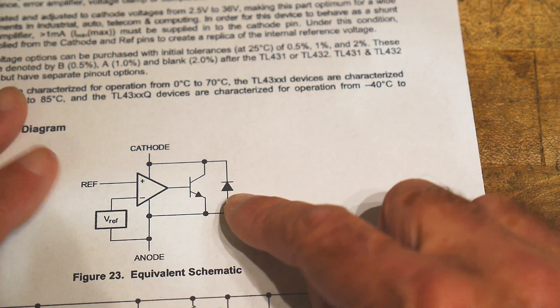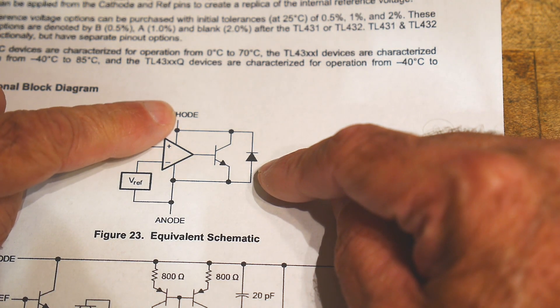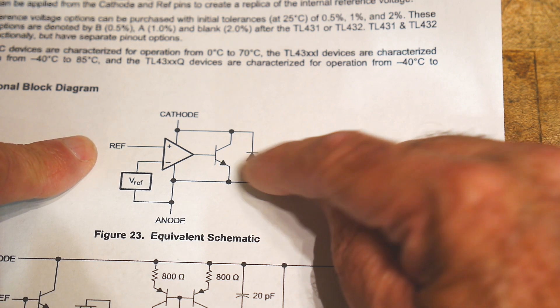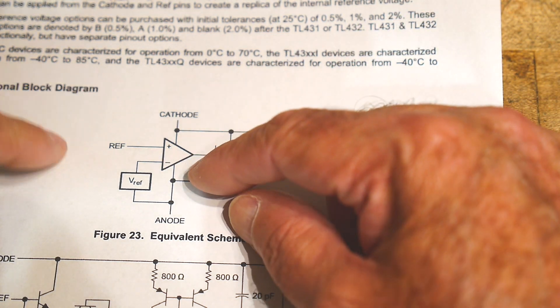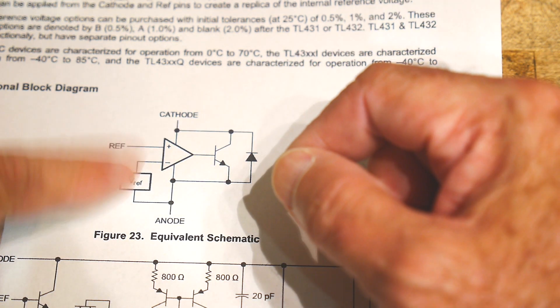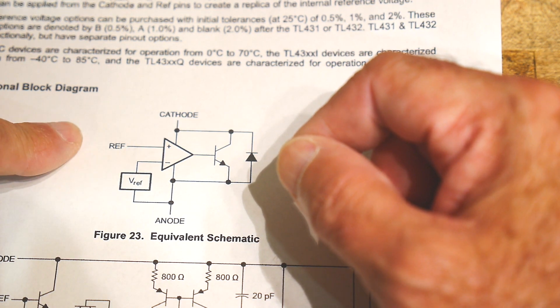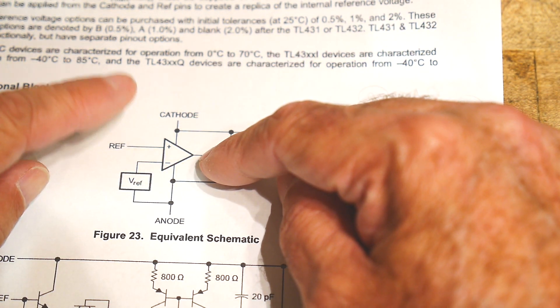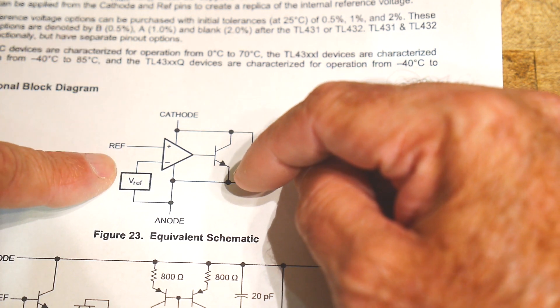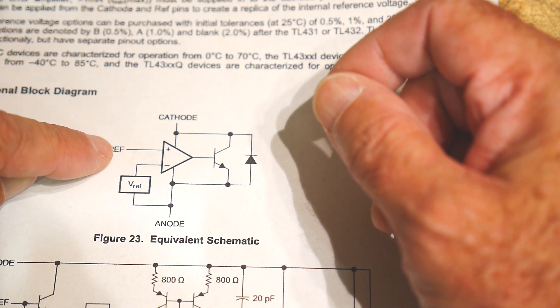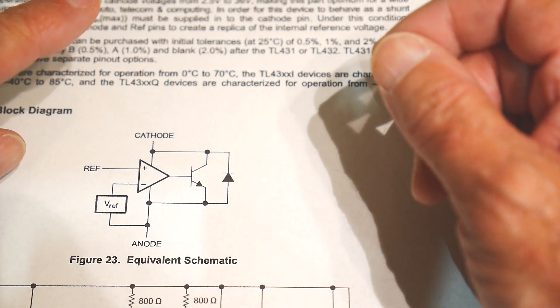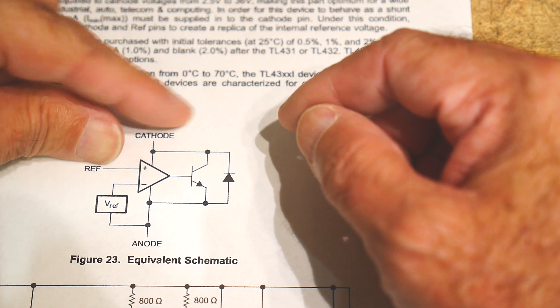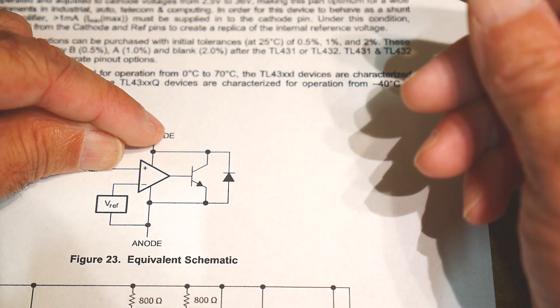This is the simplified block diagram. There's an output and a ground, and there's a reference. It actually has an op-amp inside, and it has an internal reference. The internal reference is 2.5V. If you just tie the ref to the output, then it regulates it too. It looks like a 2.5V Zener diode.